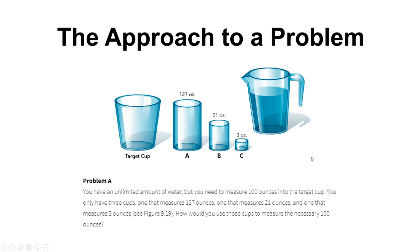One solution is to fill Cup A and pour it into the target cup, then subtract 21 ounces using Cup B, bringing the total down to 106 ounces. Then we subtract Cup C twice — 3 and 3 — reducing it by 6 ounces to bring us to 100 ounces total. That would be a pretty efficient solution. We've chosen our strategy and know how to proceed.